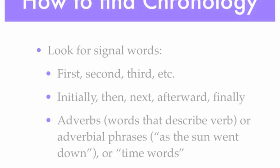So how do you find an example? Mainly you're looking for those signal words — the signposts that are built into a writing. Certain words you will see in other types of text structure: first, second, third — and those of course can progress. Initially, then, next, afterward, finally.